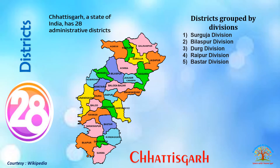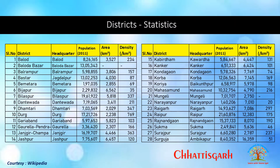There are 28 districts in the state. The districts are grouped into divisions: Surguja Division, Bilaspur Division, Durg Division, Raipur Division, and Bastar Division. Statistics of all 28 districts, including headquarters, population, area, and density, are shown here — sourced courtesy of Wikipedia with exact numbers.